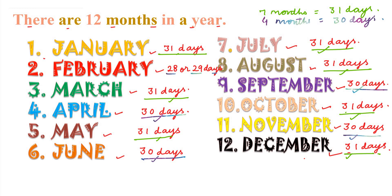Let's ask some questions. Which is the first month of the year? January. Which is the last month of the year? December. Which is the ninth month of the year? September. Like that, you know very well. Do you know why February has 28 and 29 days?